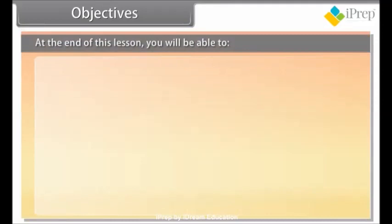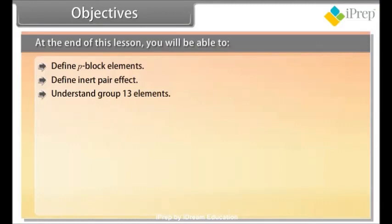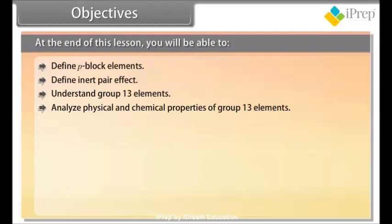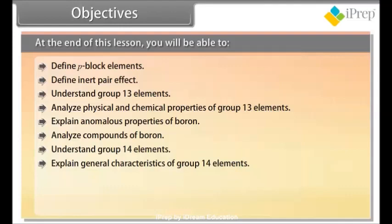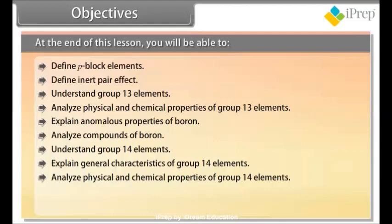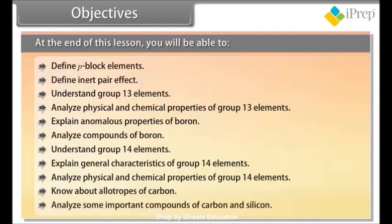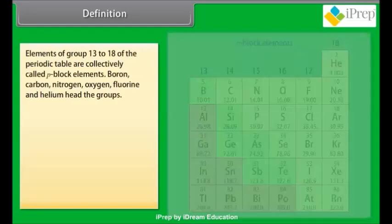Objectives. At the end of this lesson, you will be able to define P-block elements, define inert pair effect, understand group 13 elements, analyze physical and chemical properties of group 13 elements, explain anomalous properties of boron, analyze compounds of boron, understand group 14 elements, explain general characteristics of group 14 elements, analyze physical and chemical properties of group 14 elements, know about allotropes of carbon, and analyze some important compounds of carbon and silicon.